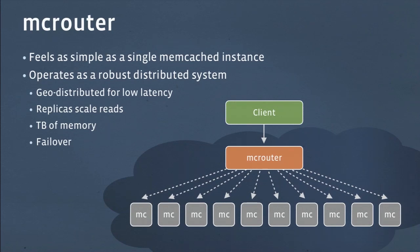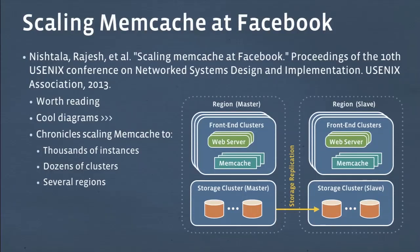There's a really good paper we wrote on this, released this year at NSDI — it's worth reading. It has diagrams and tells you a lot more detail about what's going on. If you want to know more about how we've been scaling Memcached, I suggest you read it. It tells the story of how we went from just a few instances of Memcached to thousands of instances across dozens of clusters in several regions.